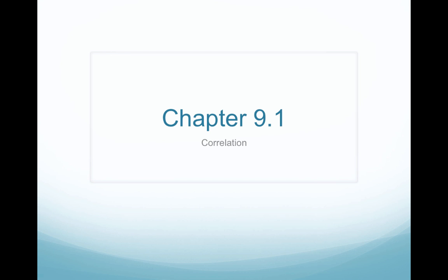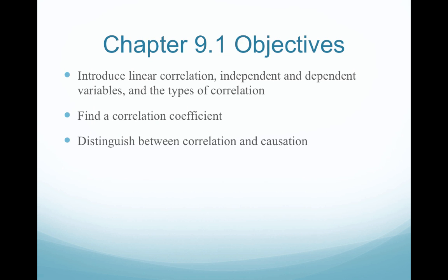Let's go into chapter 9.1 and talk about something called correlation. We're going to introduce the linear correlation, independent and dependent variables, and talk a little bit about types of correlation.